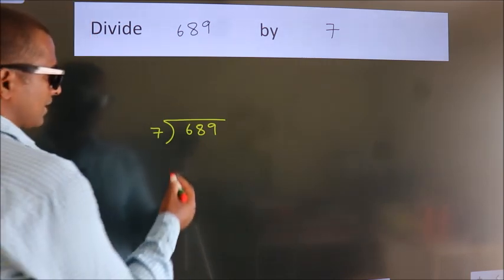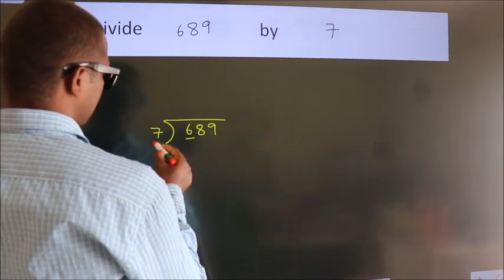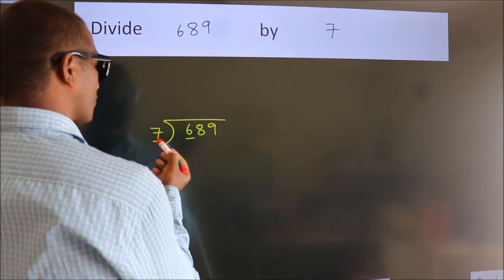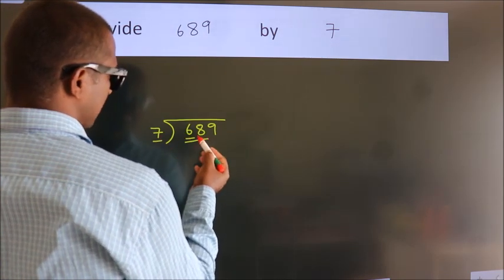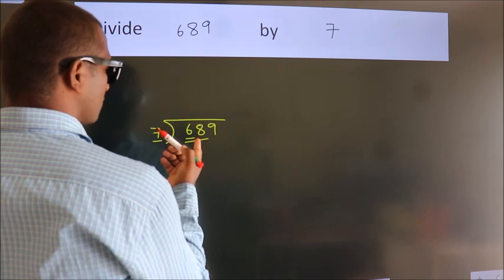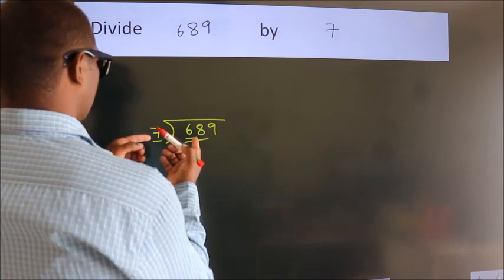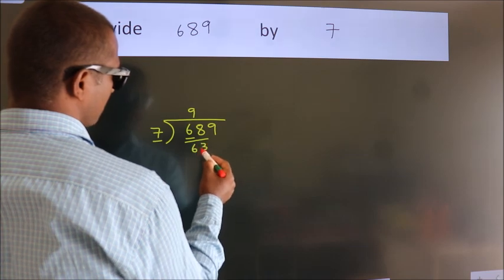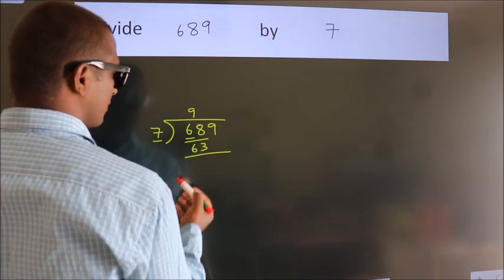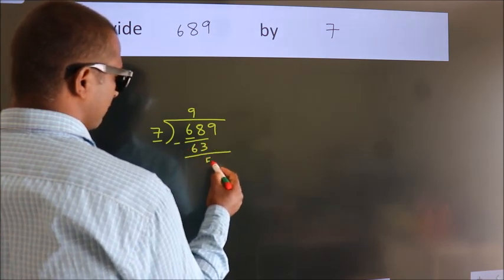Next, here we have 6, here 7. 6 is smaller than 7, so we should take 2 numbers: 68. A number close to 68 in the 7 table is 7 nines, 63. Now we subtract and get 5.